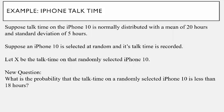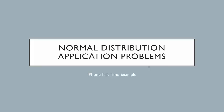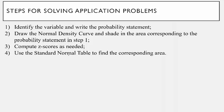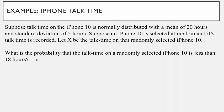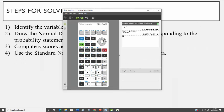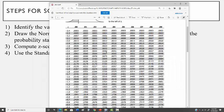Here was the question: what is the probability that the talk time on a randomly selected iPhone X is less than 18 hours? This is an application problem. You're not going to be able to use the empirical rule for this, so you're going to need a new method. We kind of set this up in a previous lecture when we were talking about the standard normal distribution. I'm going to talk about the four steps to do this, and you're going to need your trusty calculator and the standard normal table.